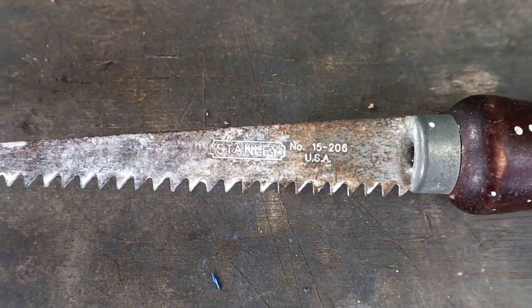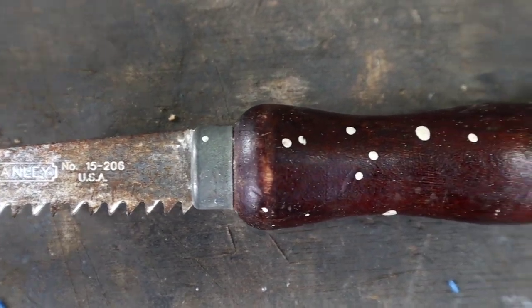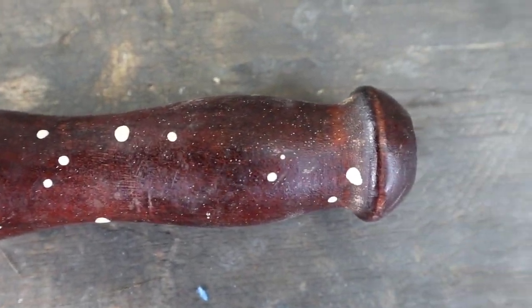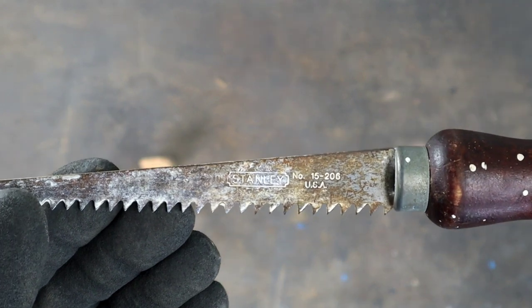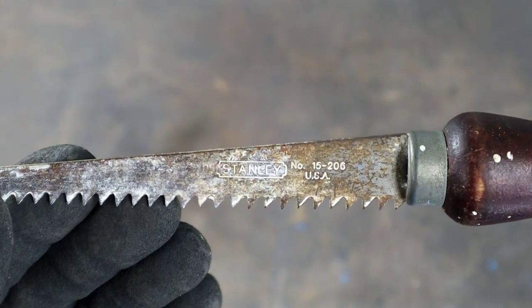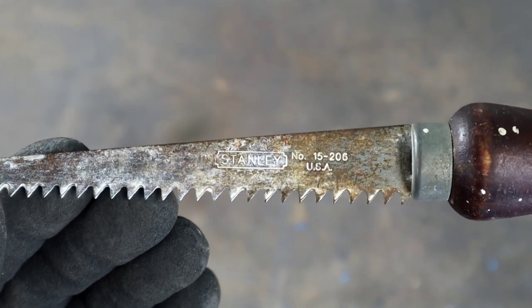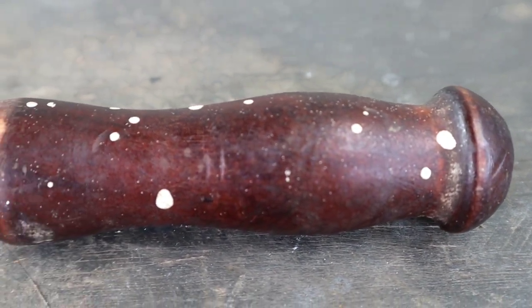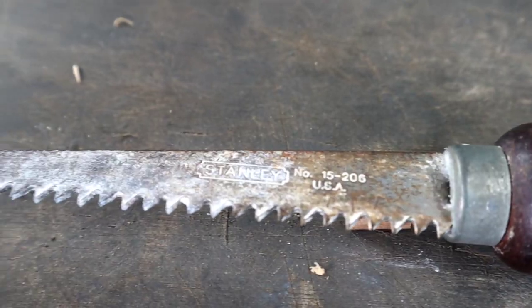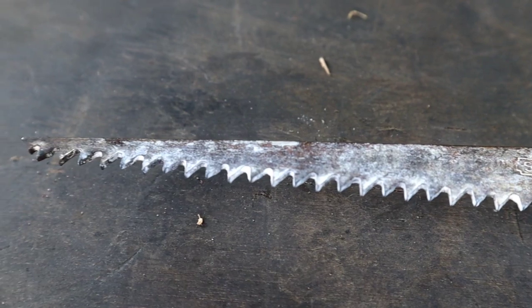Our American wallboard saw blade is all dulled out and today we're going to show you how to get it back into top shape. For this project, we're using a Stanley 206 wallboard saw that needs sharpened, the teeth need set, it has years of sheetrock left on it, the handle needs some visual upgrades and you'll find the usual rust issues that most of these vintage tools have.